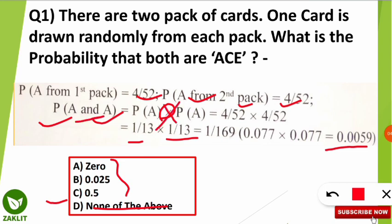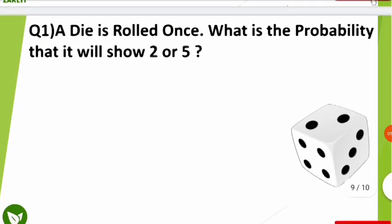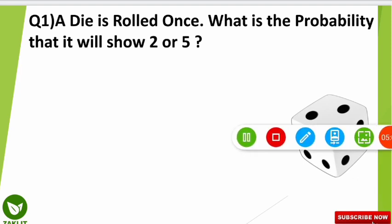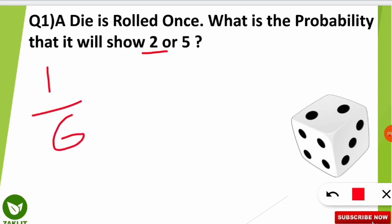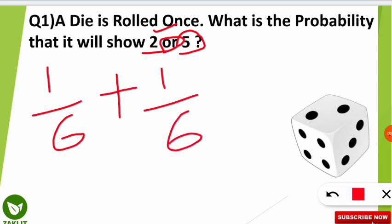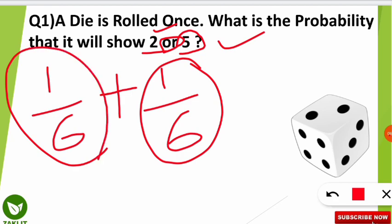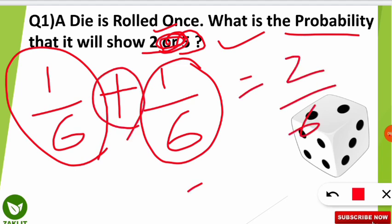To reinforce the OR rule, consider: a die is rolled once — what is the probability that it will show 2 or 5? The probability of getting a 2 is 1/6, since there are 6 possible outcomes and only one face shows 2. Similarly, the probability of getting a 5 is 1/6. Since it is OR, we add: 1/6 + 1/6 = 2/6 = 1/3. The answer is 1/3.